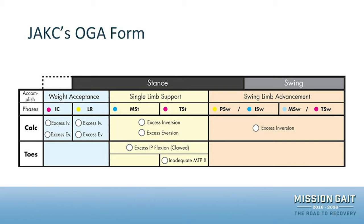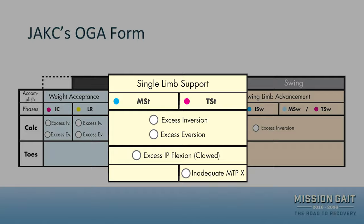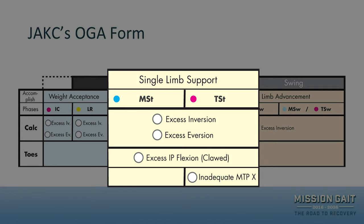For the calcaneus and toes, excess inversion and eversion can happen throughout the whole gait cycle. Inversion alone is seen in the swing phase, but the most clinically significant place to note inversion or eversion is in single limb support, where the weight of the body is placed. Note that toe observations require the shoe to be off — if the shoe is on, you won't capture those findings.